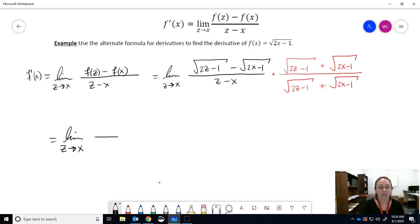Z approaches X, and then we'll multiply the conjugates. Remember, when you multiply conjugates, when you FOIL them, do you need to do the whole FOIL? No. The middle terms cancel out. So if we do first terms and multiply them together, square root times itself is 2Z minus 1.